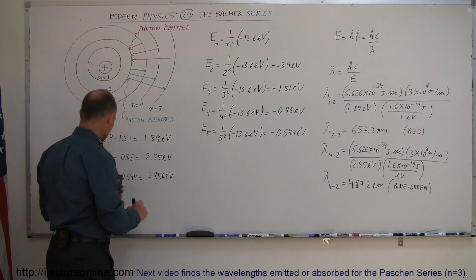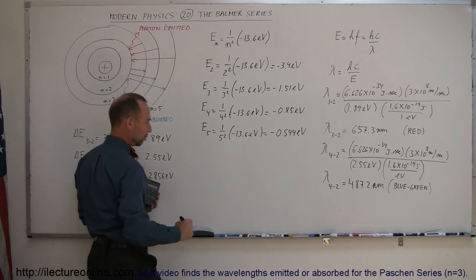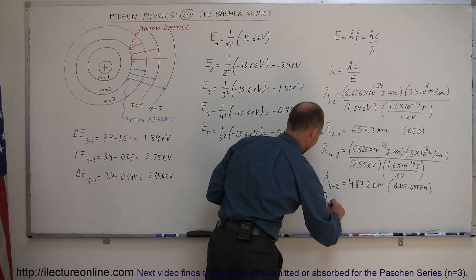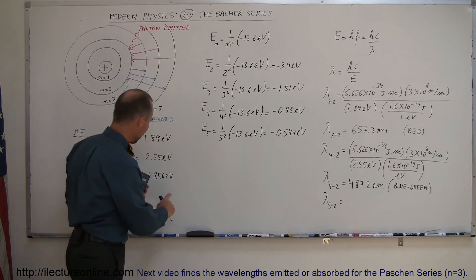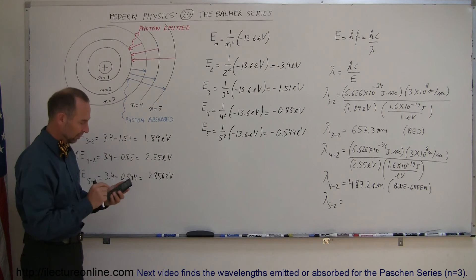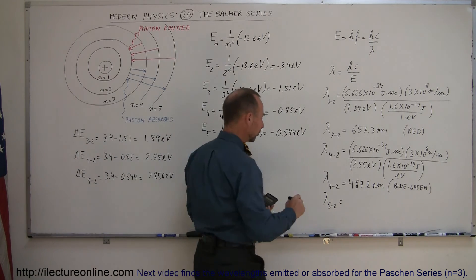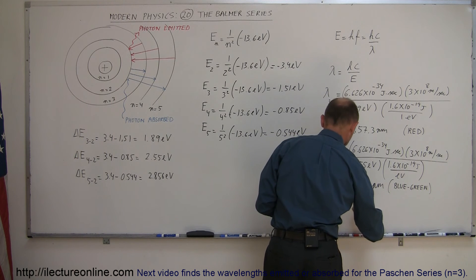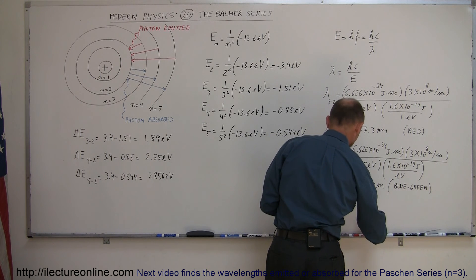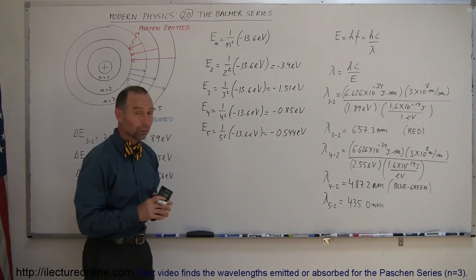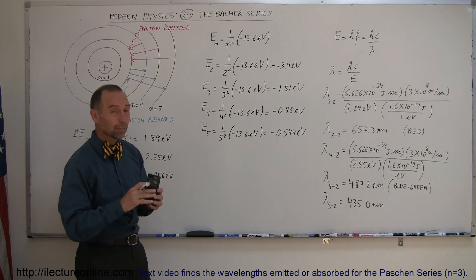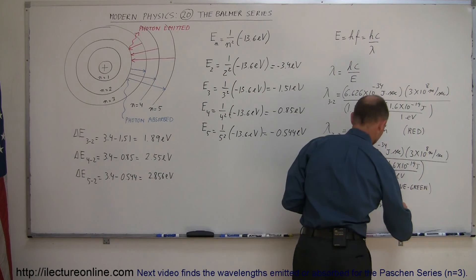The next one would be the jump from 5 to 2. We would do exactly the same, except instead of 2.55 electron volts difference, we use 2.856. That would be 435 nanometers. Notice, that is fairly close to 400 nanometers, so that would be kind of in the purplish color.